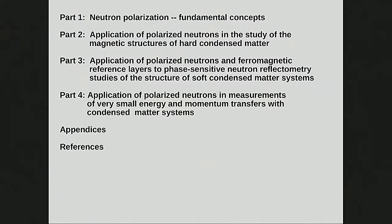Part one covers basic ideas about the neutron and its polarization. Part two applies polarized neutrons to hard condensed matter structures. Part three covers polarized neutrons used for other purposes where there's no magnetization of interest but you can still exploit neutron polarization properties. Part four extends that to non-magnetic systems, using the magnetic moment as a control parameter. This last part is a preliminary to tomorrow's lecture on spin echo.